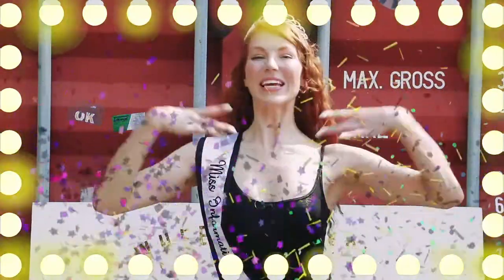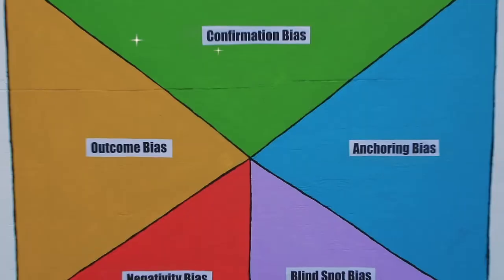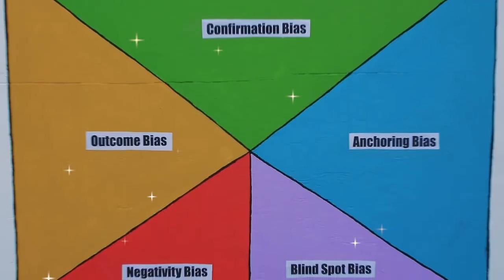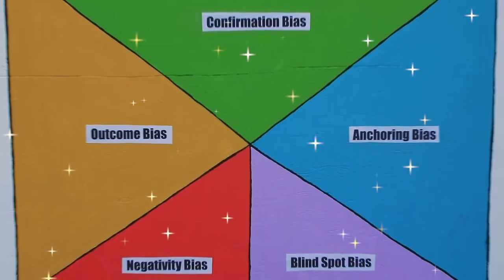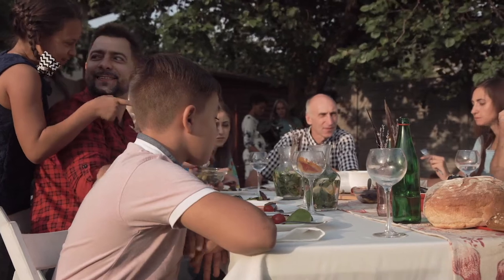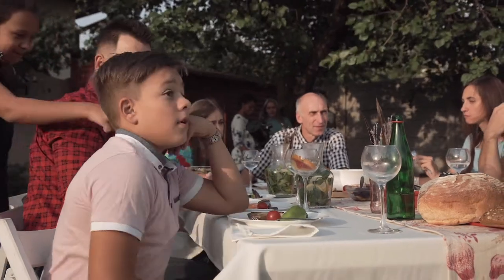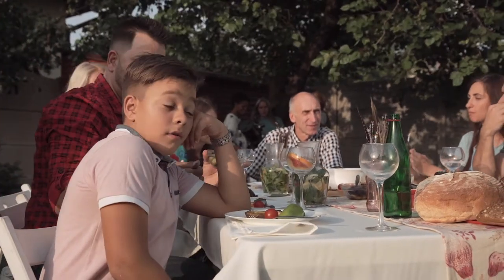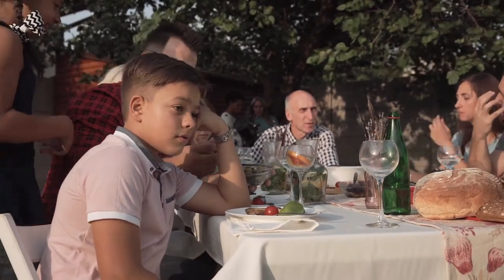Welcome to the media circus. Step right up and hurl your way to better decisions by landing on one of the five types of major cognitive bias. Check yourself before you wreck your family dinner with your really annoying cousin Mark.